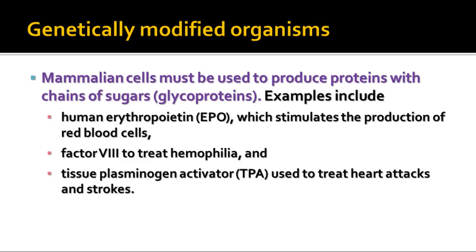There are some proteins that have to be made by mammalian cells. If you're trying to produce glycoproteins that have chains of sugars attached to them — like erythropoietin and factors to treat hemophilia listed here on the slide — those have to be made by mammalian cells growing in cultures. So there are various lines of mammalian cells that can be used to grow and produce those kinds of proteins.